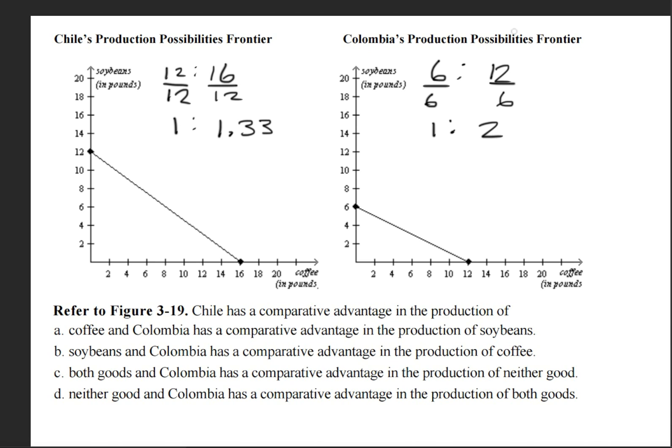Obviously 2 is of greater quantity compared to 1.33, and the value of 2 belongs to Colombia. So it is Colombia who has the comparative advantage for coffee.